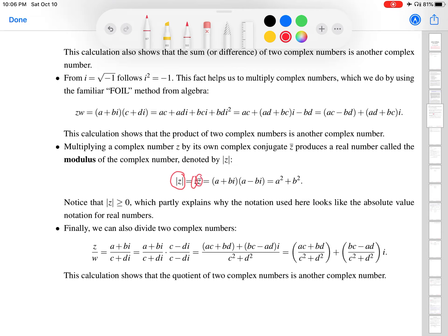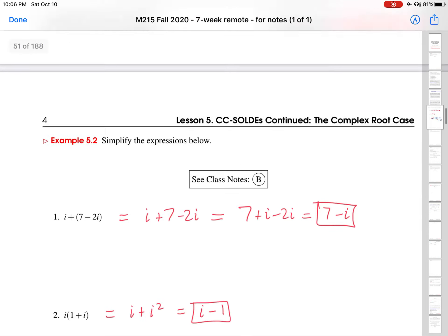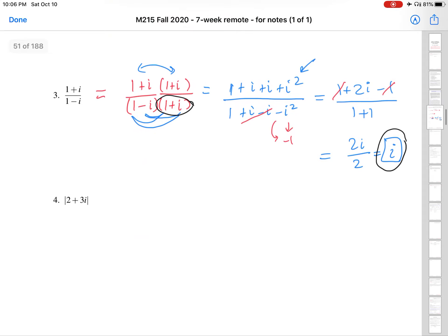The modulus is the complex number times its complex conjugate. And one thing is that the modulus always yields a real number. Z bar produces a real number called a modulus. So that's good to know, because it's a way to check your work. If you calculate the modulus of a complex number, and you somehow end up with a complex number, then you know that something went wrong along the way.